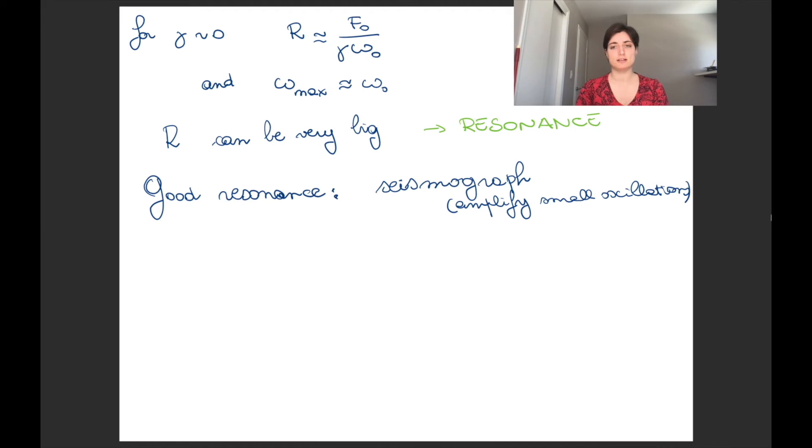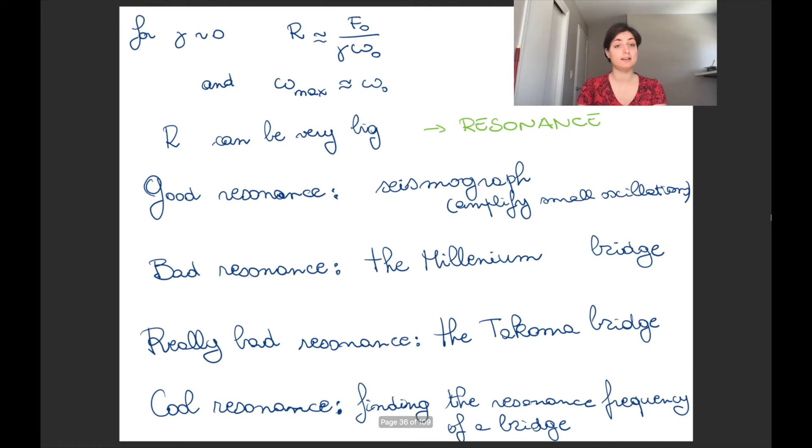Examples of good resonances are, for example, seismographs. You want to amplify small oscillations such that you can detect them. But there are also bad resonances, really bad resonances, and kind of cool resonances. An example of a bad resonance is the Millennium Bridge in London. This bridge was opened in 2000 for the new millennium, and had the bad characteristic of having a resonance with the steps of people. So if too many people were stepping on the bridge, it would go into resonance with their stepping.